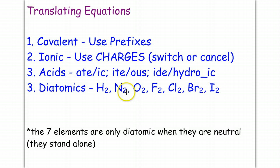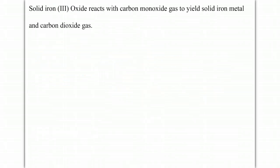And then the diatomics, keep in mind, are the seven elements that only exist diatomically and this is when they're neutral. Keep in mind they stand alone. So if they're found with another element then it's not a diatomic. So let's practice some.